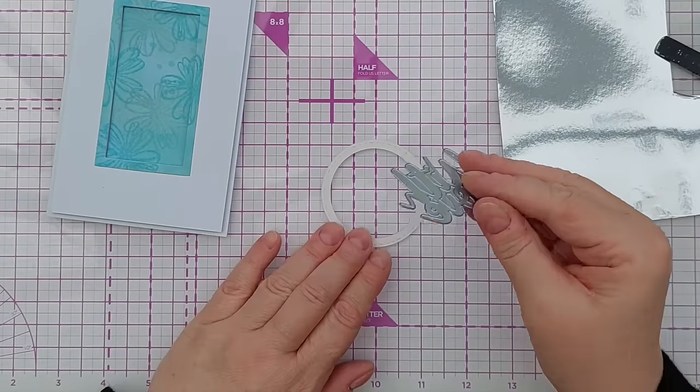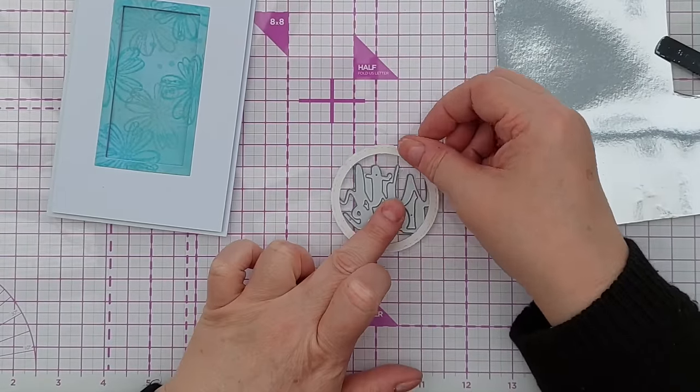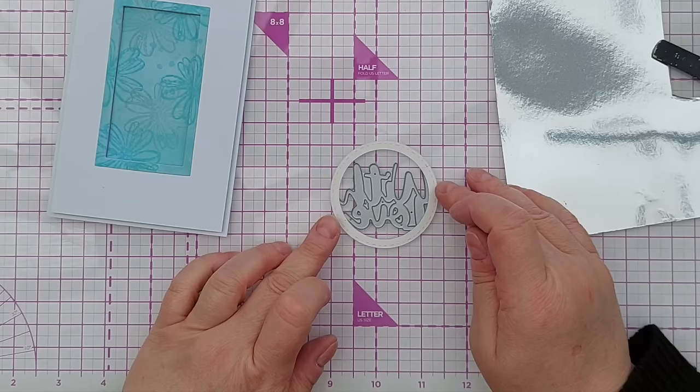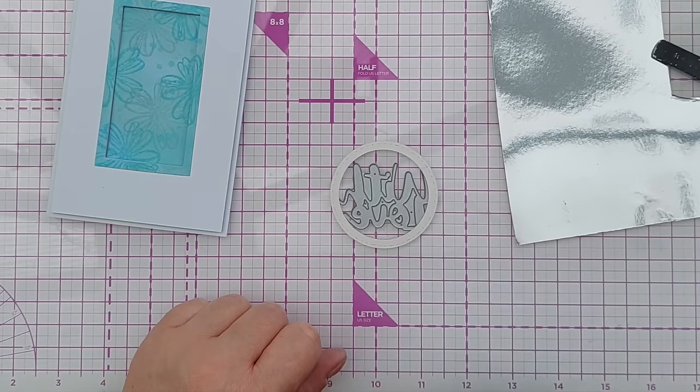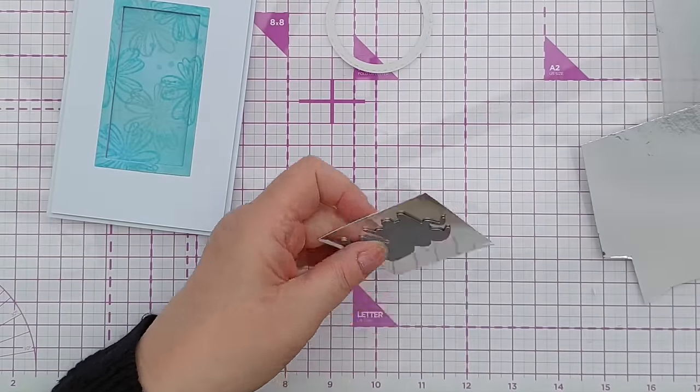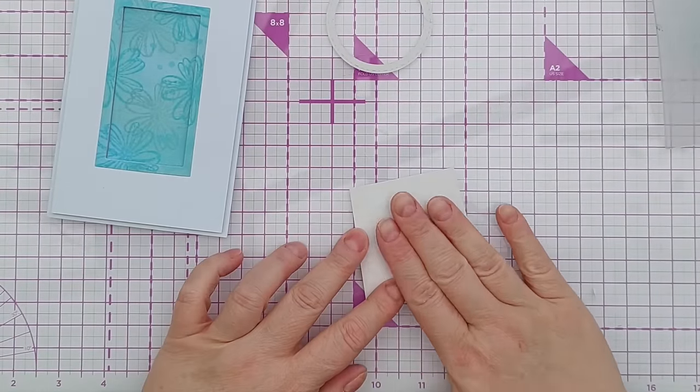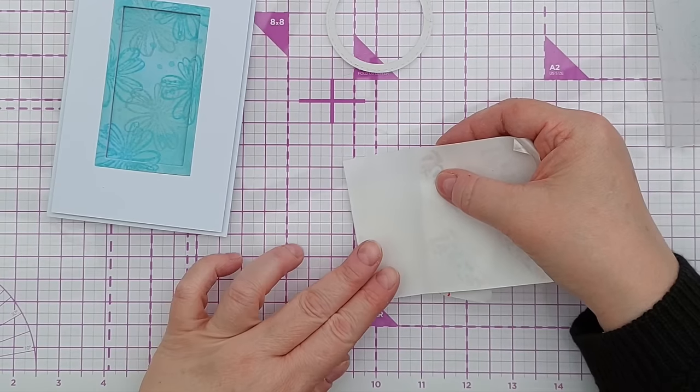I'm also going to cut my sentiment from the silver. The important thing with this is that you want your sentiment to be big enough so that some of it touches the frame. I'm going to cut my 'with love' sentiment, but I'm going to put some double-sided sticky on the back before I do that. You don't have to cover the whole sentiment—you could get away with just covering the edges where it's going to touch the frame.